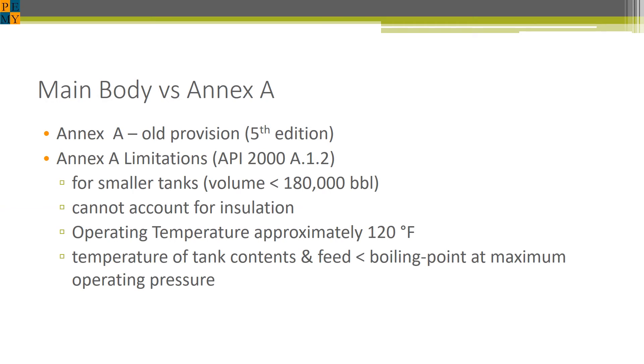Before I cover the details of the calculations, I want to first contrast the current main body or chapter 3 of API 2000 versus Annex A. Annex A used to be part of the main body back in the 5th edition. However, due to some recent research in vapor contraction and vapor generation, they found that in very rare circumstances, the old provision was actually unconservative. To alleviate this, they developed this new standard which is now in the main body and relegated those old provisions into Annex A.